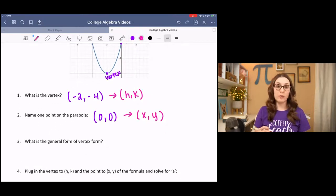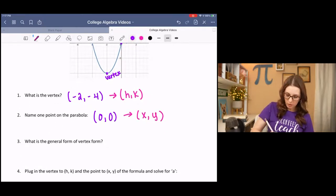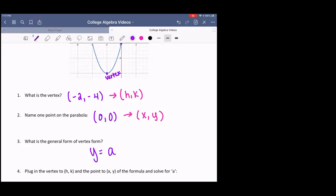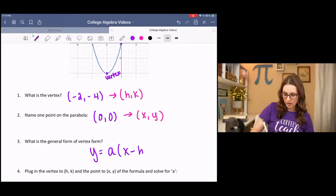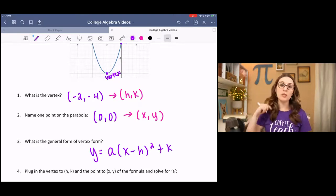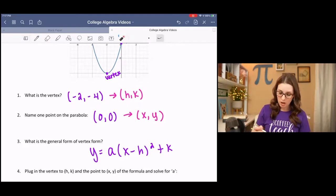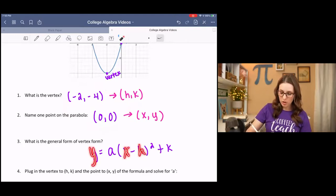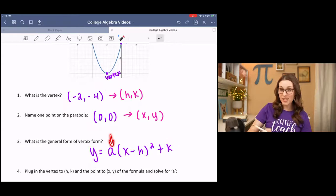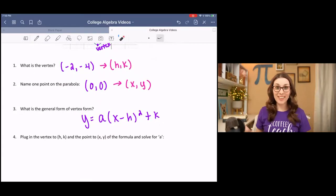And then vertex form is y equals a times x minus h squared plus k. Now if you'll notice in this form, we actually have a lot of information. With just two points, we have four pieces of information. We have y, we have x, we have h, we have k. So all we're missing is a, which means that we can find it.